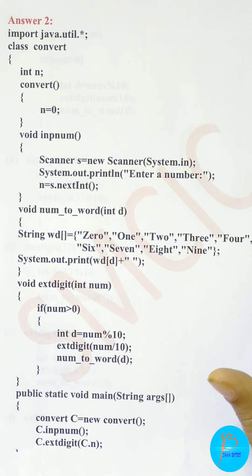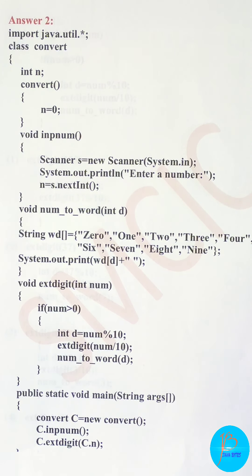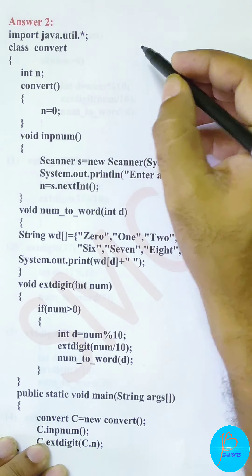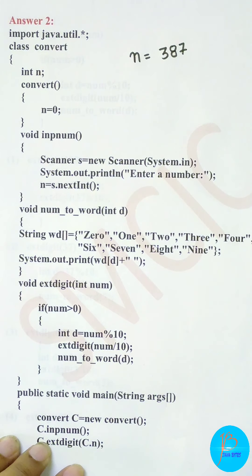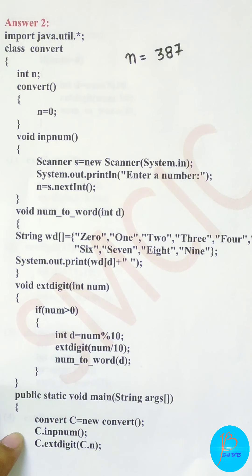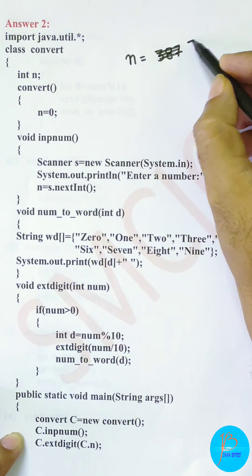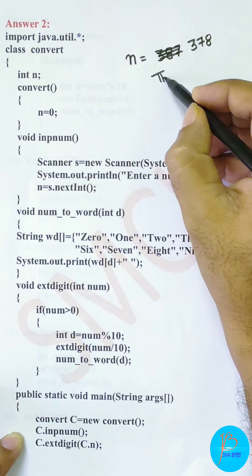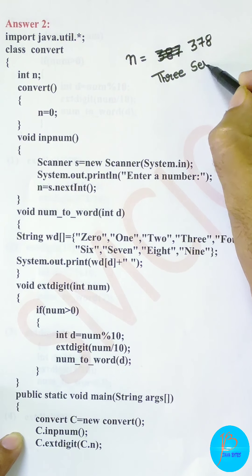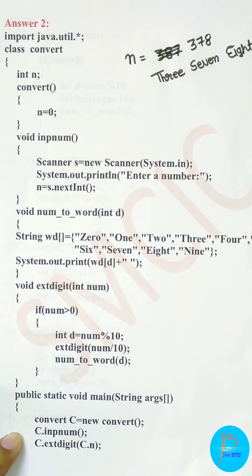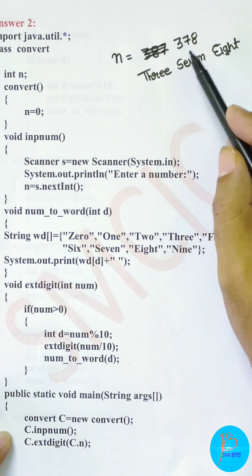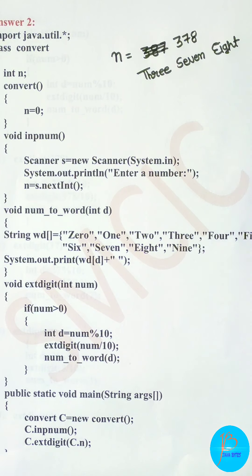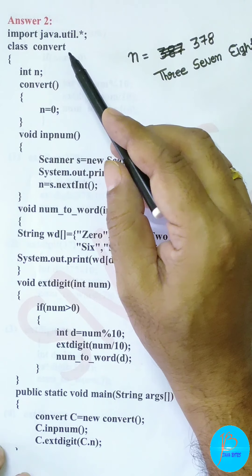The main problem is: the class has a data member 'n', and you have to input a value into it. For example, if I input 378, your job is to print it in words - so it will print three, seven, eight. You have to print all the individual digits of that number in words.